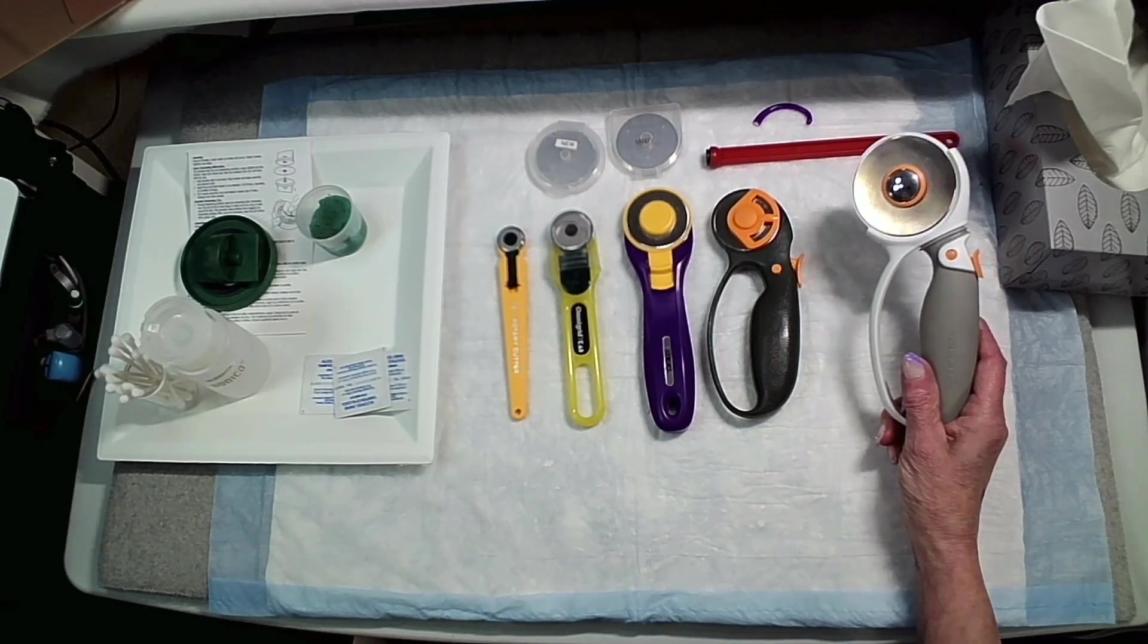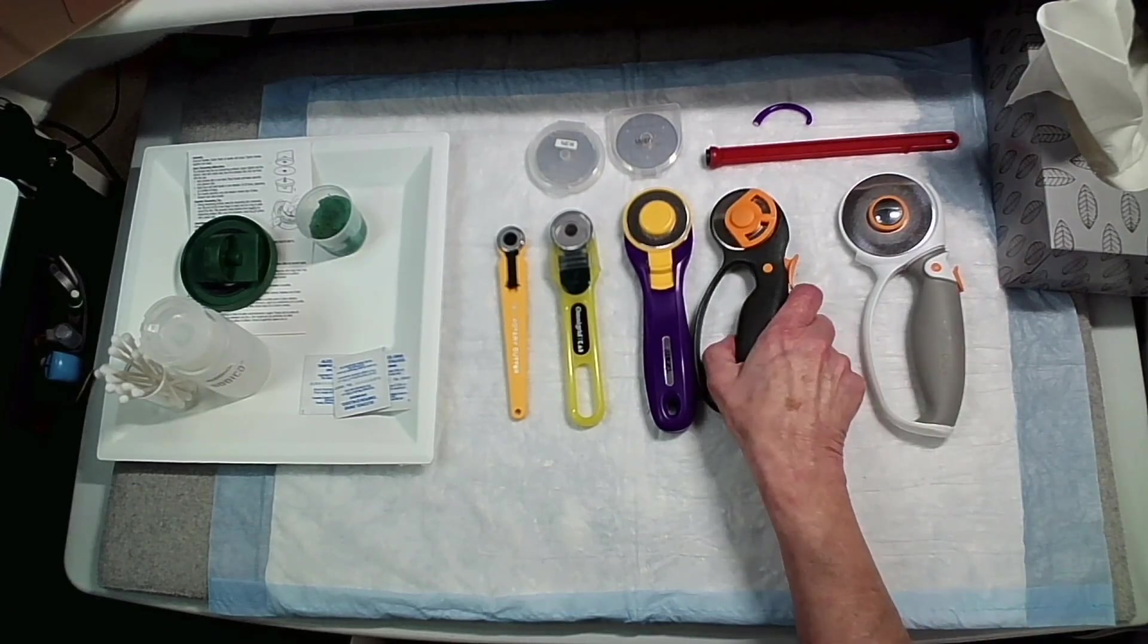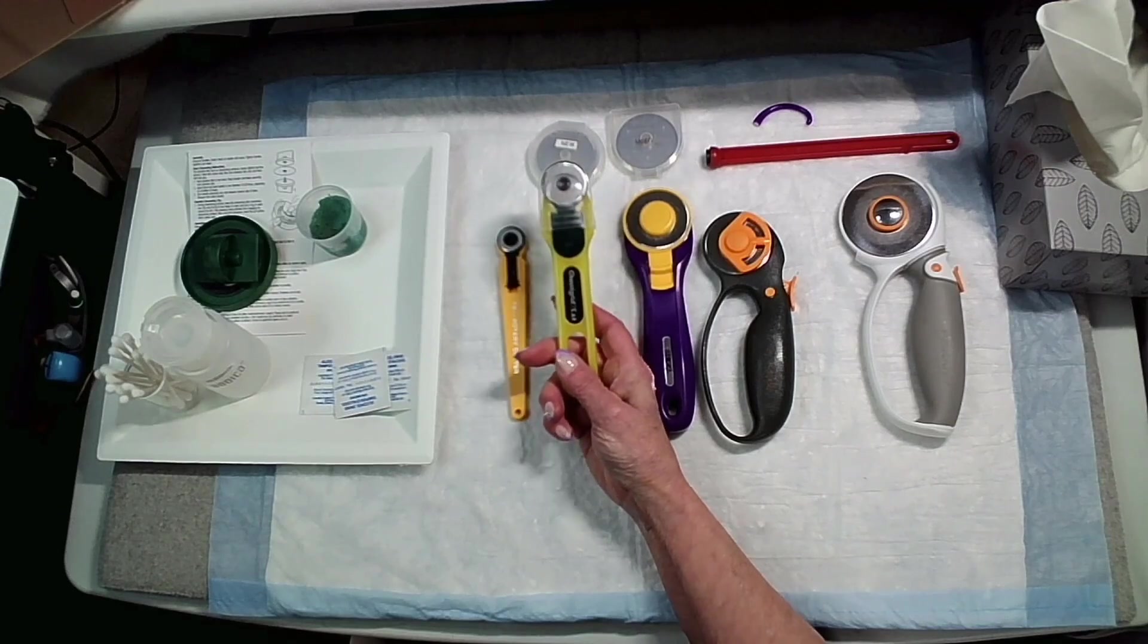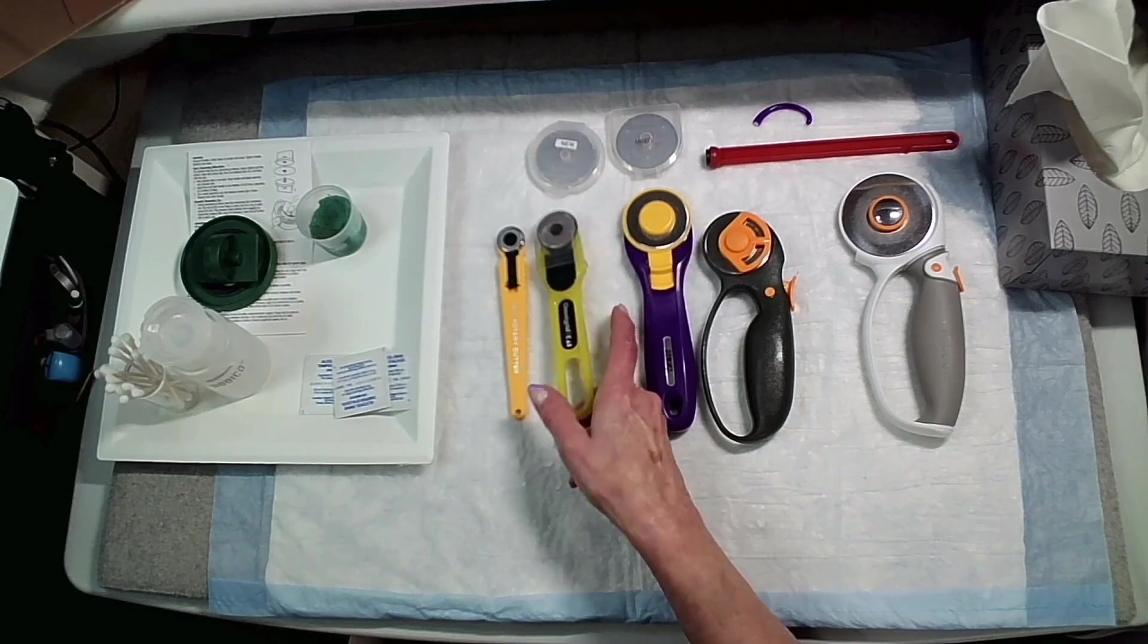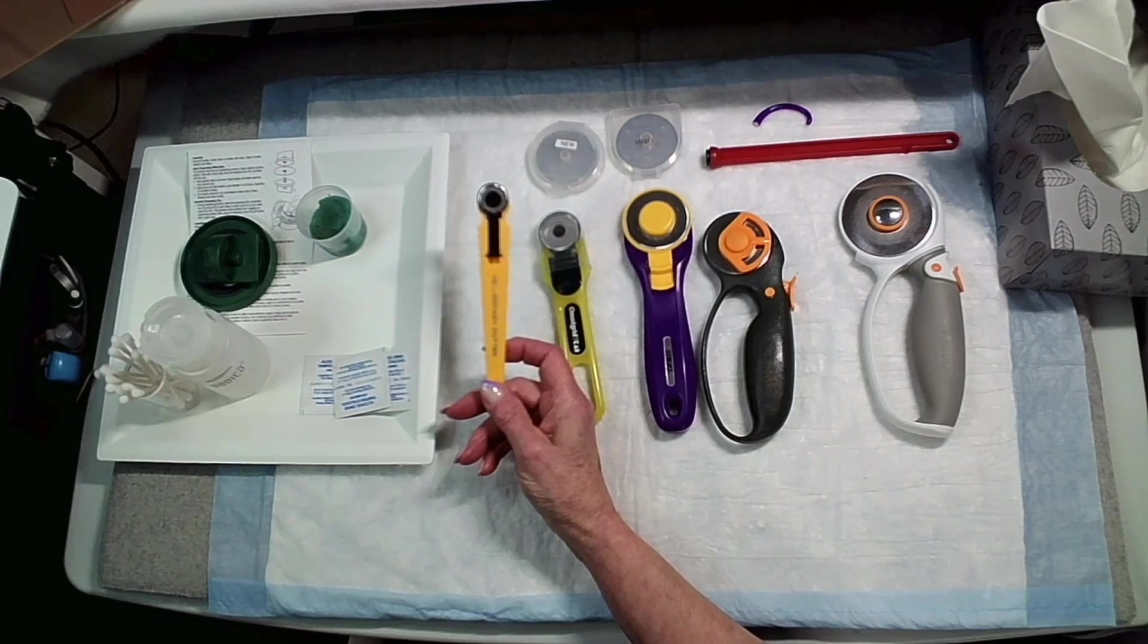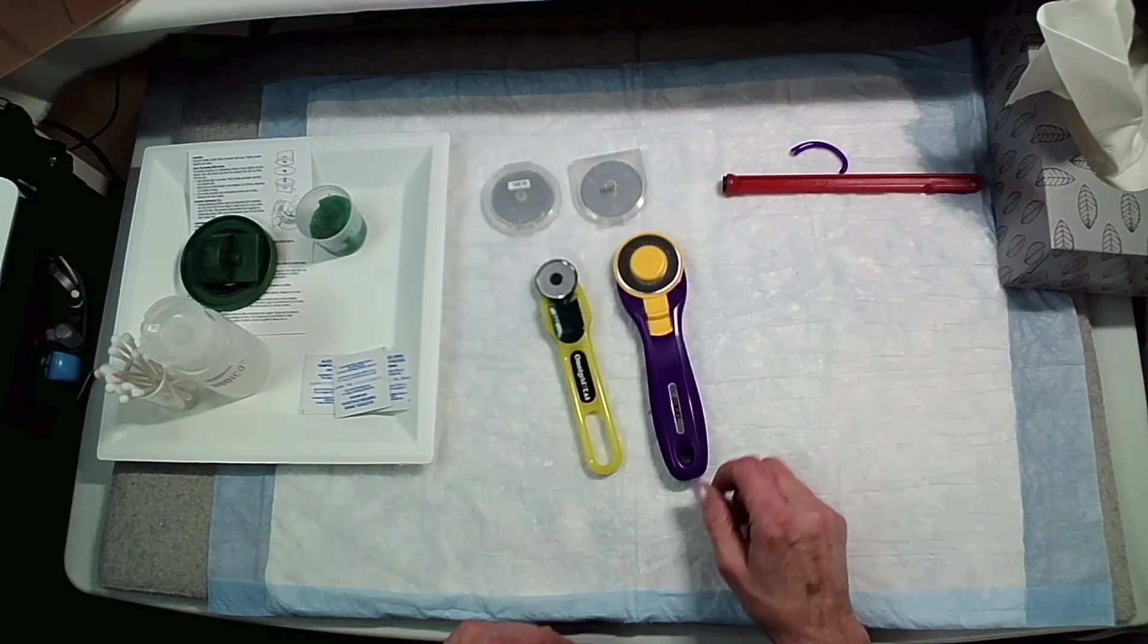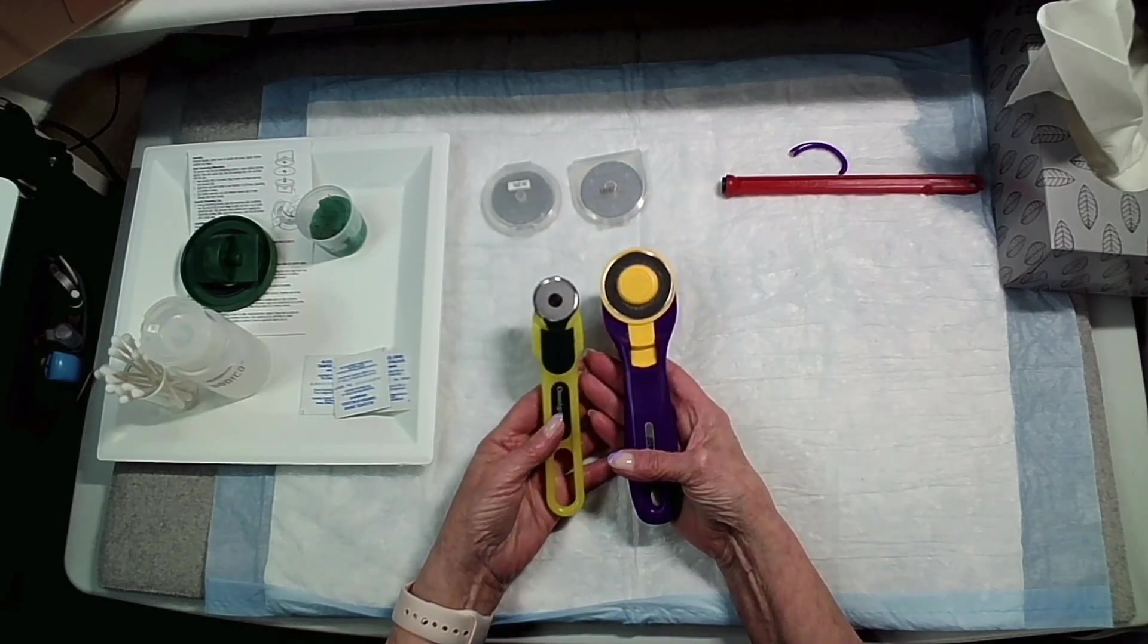What fabrics you're cutting is also going to make a difference to what rotary cutter you're going to choose. The 60 millimeter one cuts through multiple layers of fabric. The 45 won't cut through as much fabric. The 28 millimeter is not going to cut through as many layers of fabric. And of course the mini one I only use for single layer fabrics and cutting around small curved edges.